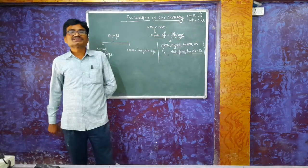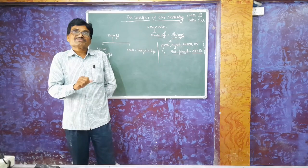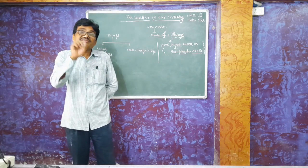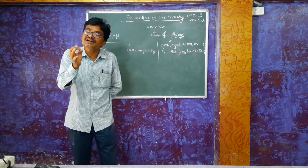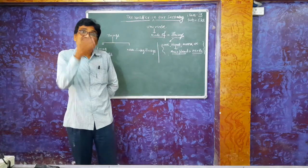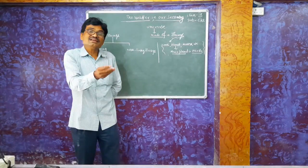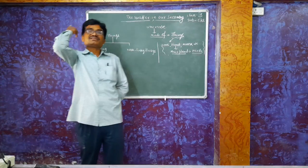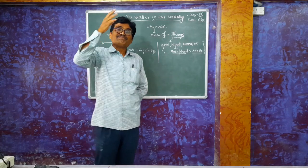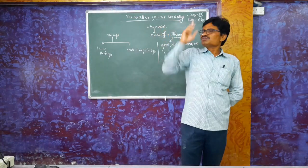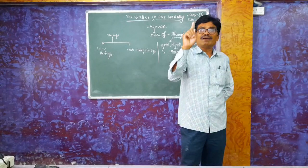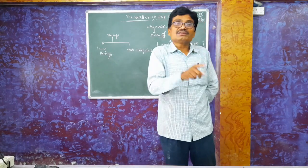It means that everything in the universe is made up of — Prithvi means earth, Jal means water, Agni means fire, Akash means sky, and Vayu means air. So everything is made up of only five tattvas, which are called Panch Tattva.